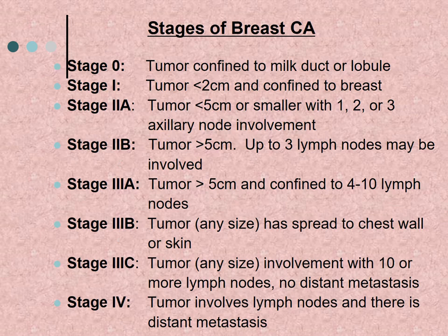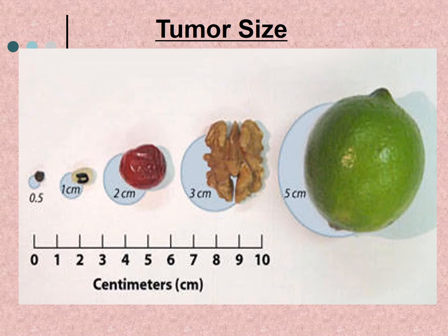The stages of breast cancer are: Stage 0 — tumor confined to the milk duct or lobule. Stage 1 — tumor less than 2 cm, confined to the breast. Stage 2a — tumor less than 5 cm with 1–3 axillary node involvement. Stage 2b — tumor greater than 5 cm with up to 3 lymph nodes involved. Stage 3a — tumor greater than 5 cm confined to 4–10 lymph nodes. Stage 3b — any size tumor spread to chest wall or skin. Stage 3c — any size tumor with 10 or more lymph nodes and no distant metastases. Stage 4 — tumor involves lymph nodes with distant metastases.